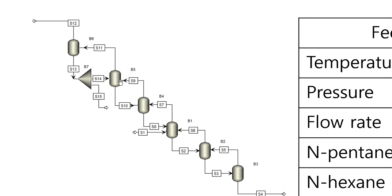In distillation basics, the top stage leads to the condenser, where it depends on whether you want complete or partial liquefaction. With partial liquefaction, some product goes to S12 and the remaining to S13. This system has four stages, a reboiler, and a condenser, representing a distillation column where each flash separator corresponds to one stage.